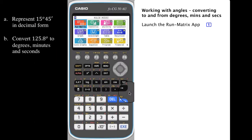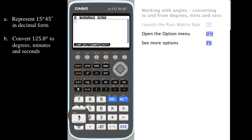To work with and convert between angles expressed in decimal form and angles expressed as degrees, minutes, and seconds, launch the Run-Matrix app by pressing 1 from the main menu.